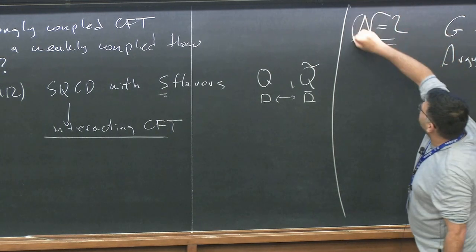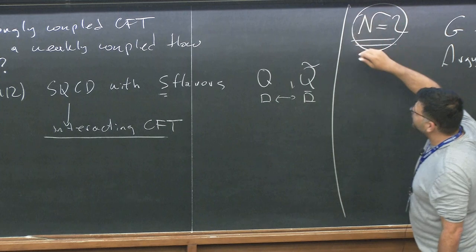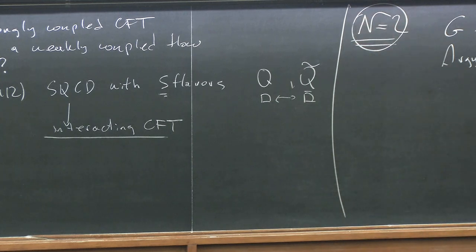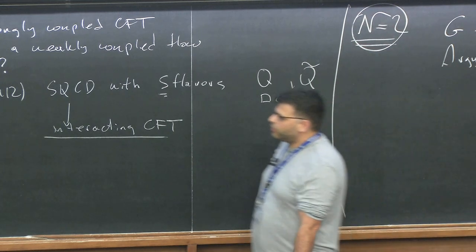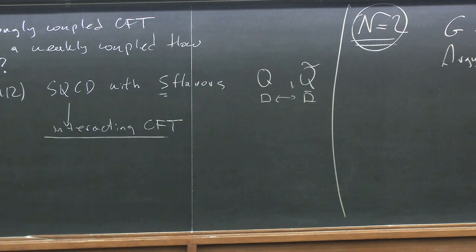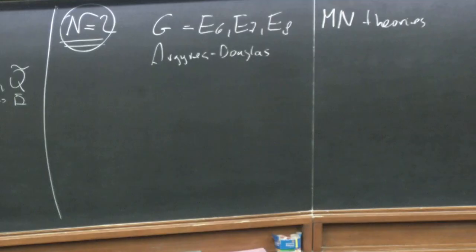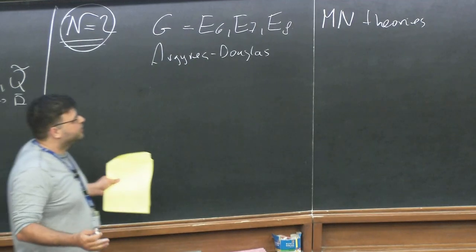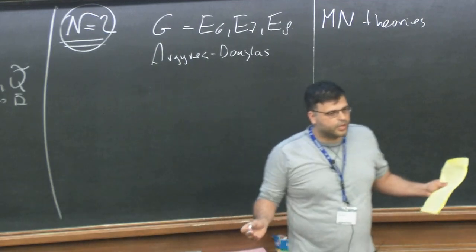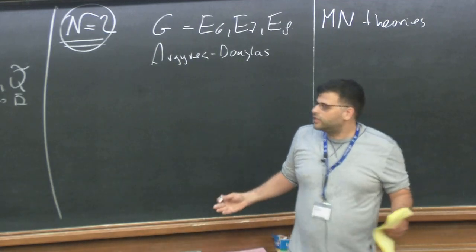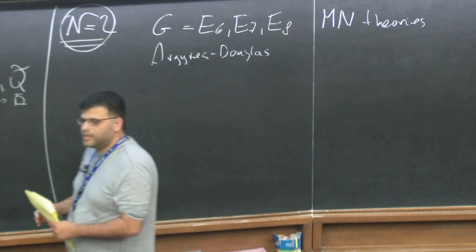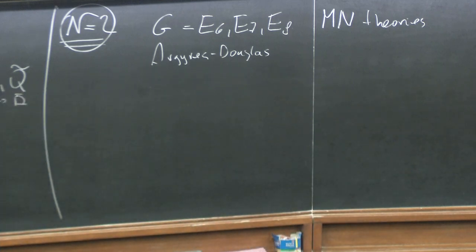There are also Argyres-Douglas theories, for which some operators have weird fractional charges that cannot appear in any Lagrangian you can write with manifest N=2 supersymmetry. If you insist on having all symmetries manifest in the UV starting point, you just cannot write any Lagrangian for most of these theories. That is how we know the question exists—and moreover, these theories come from a very sophisticated type of flow.